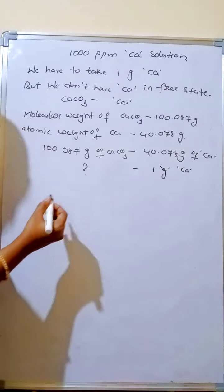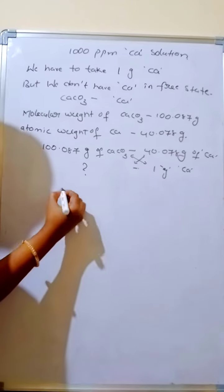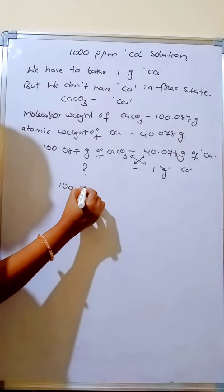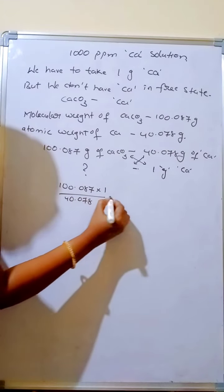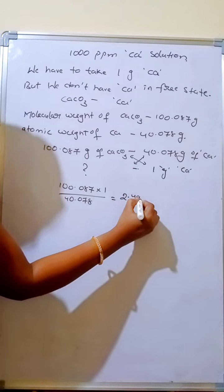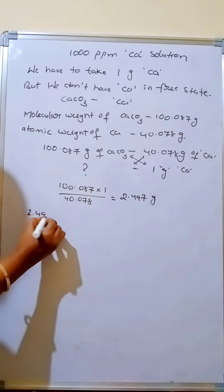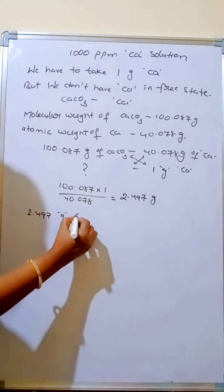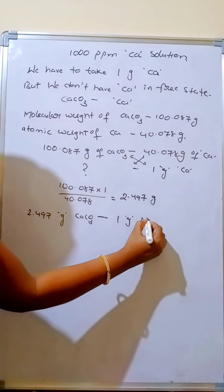So 100.087 times 1 divided by 40.078, that is 2.497 grams is the answer. So 2.497 grams of calcium carbonate, if we take it, has 1 gram of calcium.